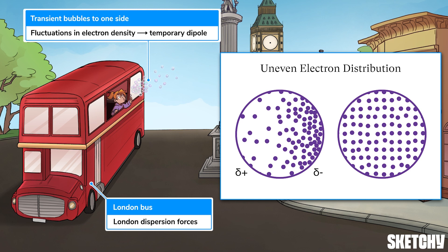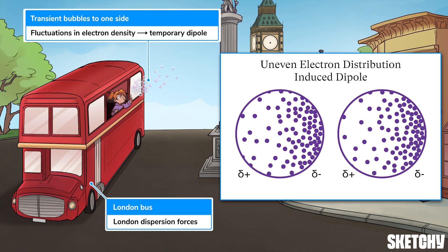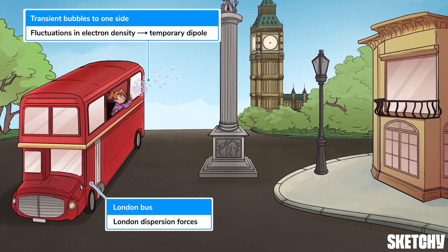This uneven electron distribution can make one side more negatively charged and the other side more positively charged, which creates a temporary dipole. Then the transiently negative end of the atom or molecule causes one side of a neighboring molecule to become more positive, and that positive end causes yet another end of a neighboring molecule to become more negative — and rinse and repeat.